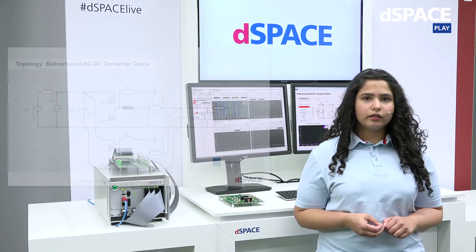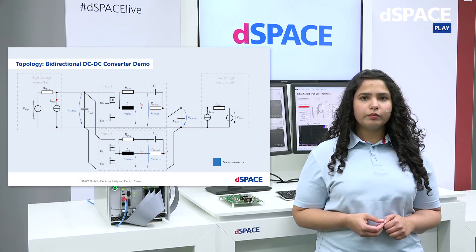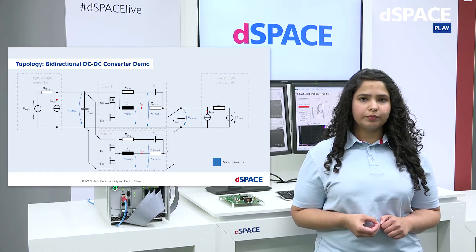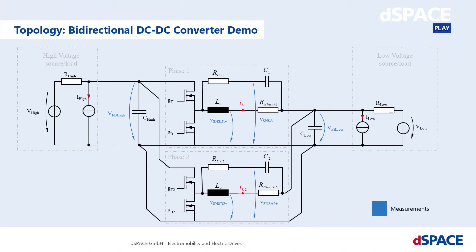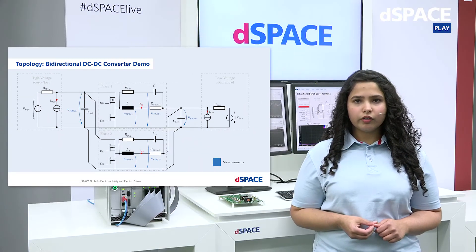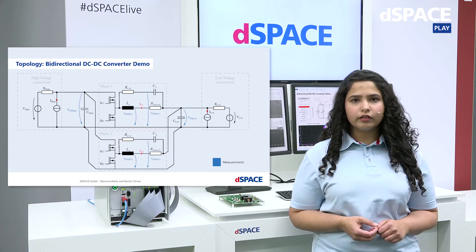Here you can see the complete circuit topology. The batteries have been replaced with simplified models using voltage sources and internal resistances. On the left side is the 48-volt high-side battery, and on the right side the 12-volt lithium-ion battery. Both batteries are connected through a two-phase interleaved bidirectional DC-DC converter. There is also circuitry for measuring the inductor current through DCR sensing or a shunt resistor.